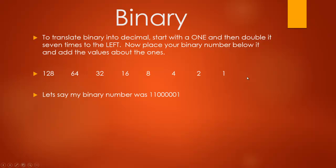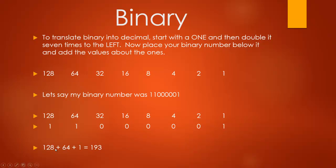So let's say my binary number was 11000001. First thing I do is I make my number line, start with 1, double it 7 times to the left, then I put my binary number underneath it, then I add the values above a 1. So there's a 128 above a 1, there's a 64 above a 1, then zeros — can't add those — and there's a 1. So I need to add 128 plus 64 plus 1, which is 193.